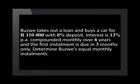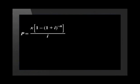Let us look at a second example. Buzo takes out a loan and buys a car for R110,000 with zero-cent deposit. Interest is 13% per annum compounded monthly over six years, and the first installment is due in three months only. Determine Buzo's equal monthly installments.